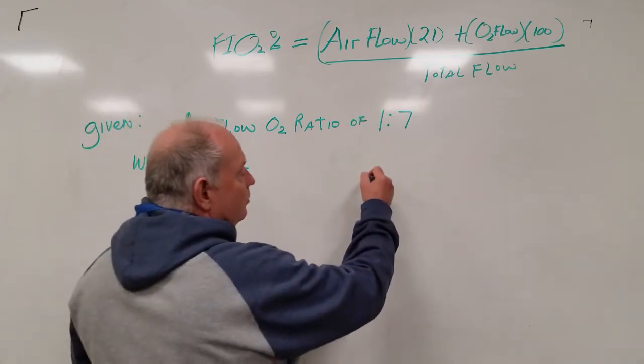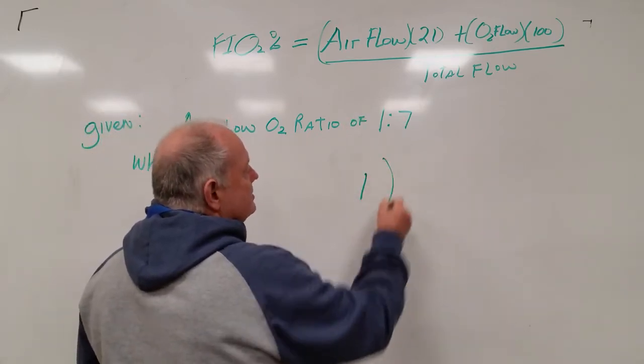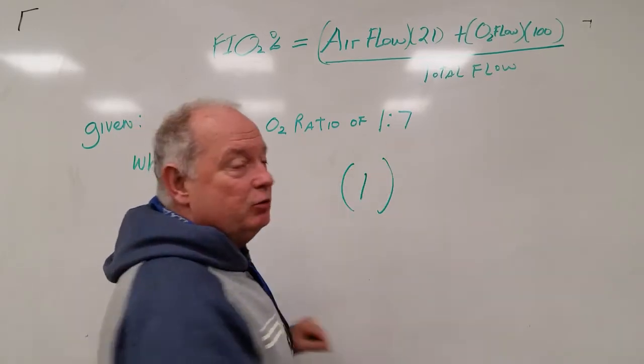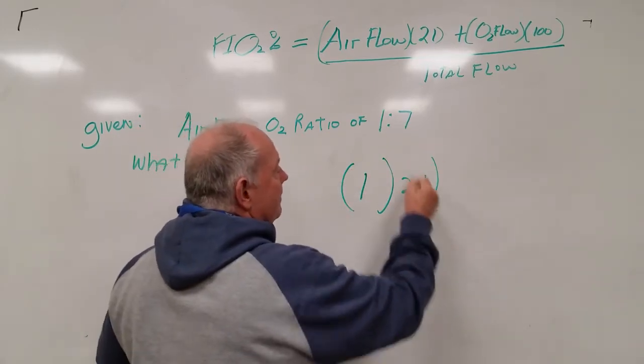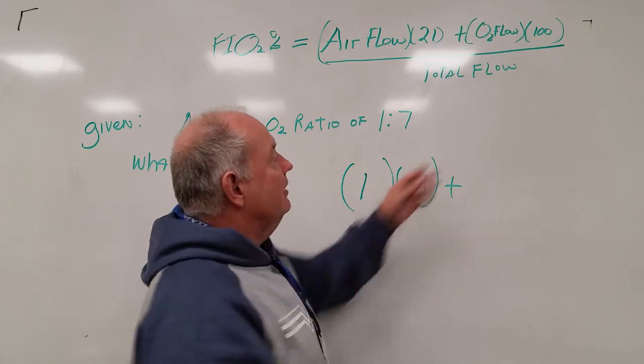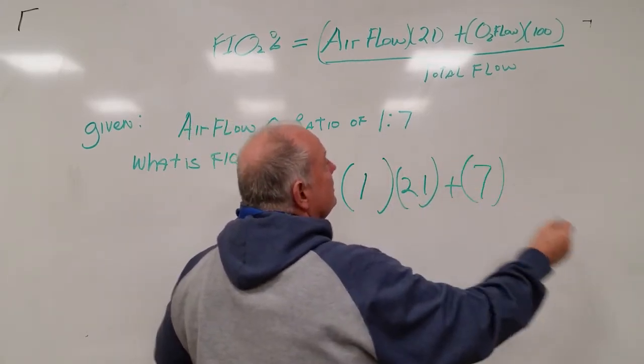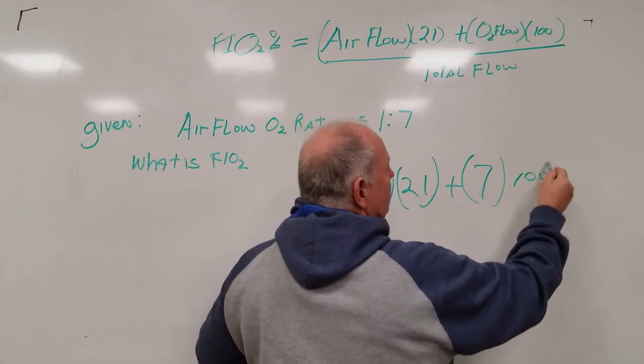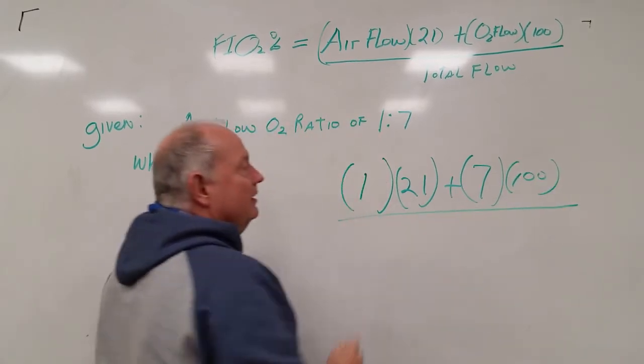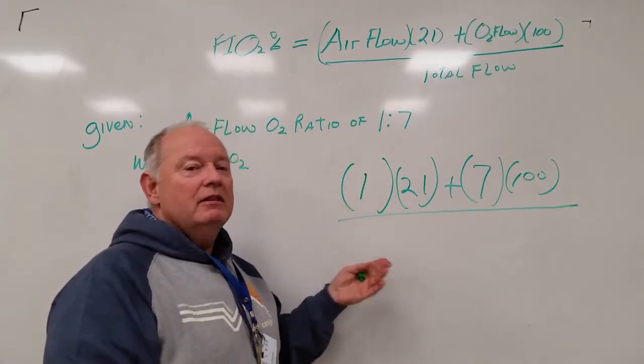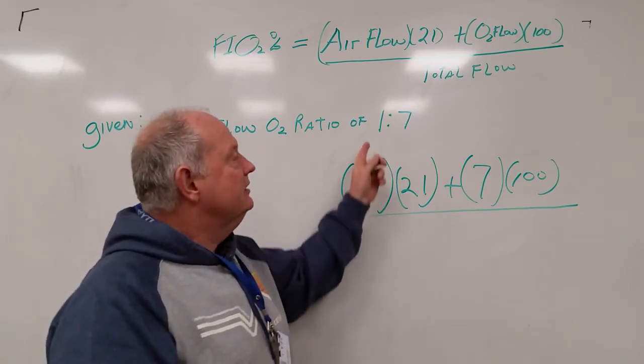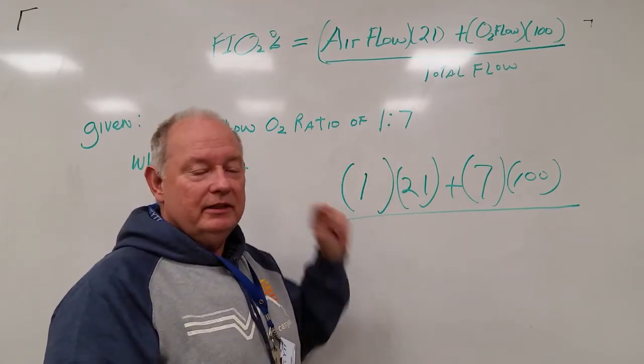Let's put the air flow in. One liter times 21 plus the oxygen flow, which is seven liters times 100, divided by the total flow. So the total flow is seven plus one, eight.